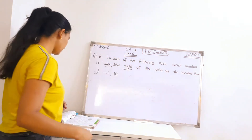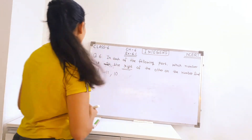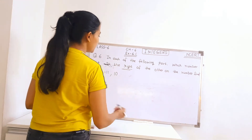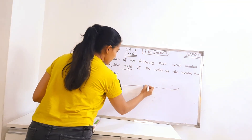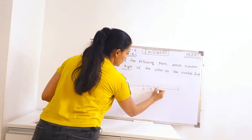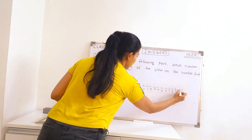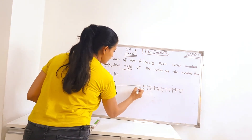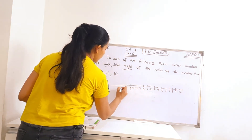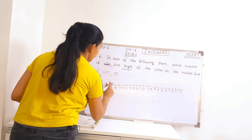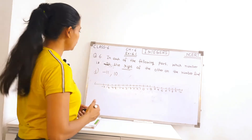Let's move to part D. There are two numbers given: minus 11 and 10. We need to draw a number line. We write 0, 1, 2, 3, 4, 5, 6, 7, 8, 9, and 10 on the right side. Since the greater number given is 11, we will write till minus 11 on the left side. Negative integers are always on the left side on the number line.